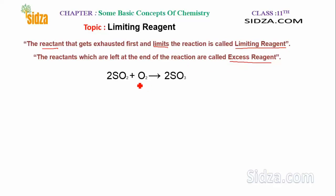To understand the limiting reagent, let's look at this balanced chemical equation. Whenever we write a chemical reaction we balance it. Here sulfur dioxide reacts with oxygen to form sulfur trioxide. When balanced, we need two moles of SO2 with one mole of oxygen to form two moles of SO3. This is a balanced chemical equation.